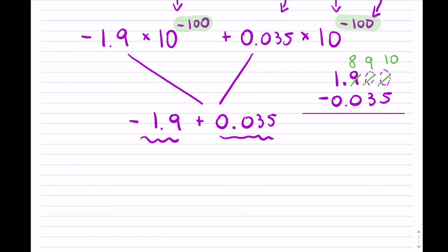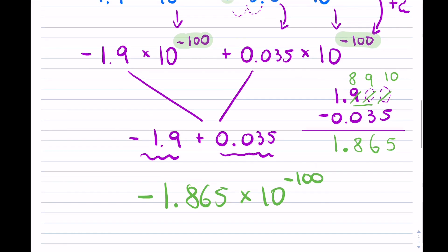So again, I borrowed one from this ninety here because I couldn't borrow it from the zero. Now ten minus five, so that's five; nine minus three, which is six; eight minus zero, which is eight. The decimal stays the same, and then I have one. So we said that the answer is negative. The exponent stays the same, and you're done that question. You can review this to see how to do something like that.